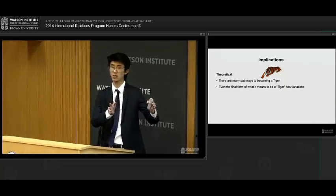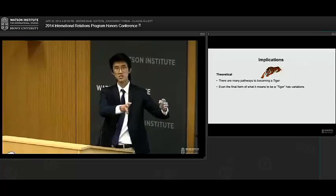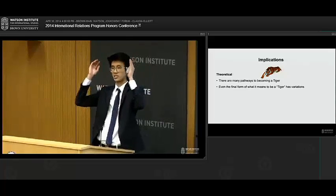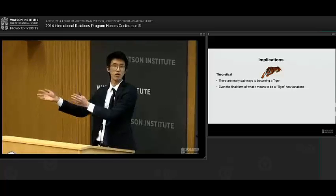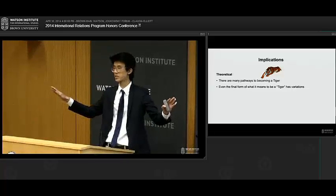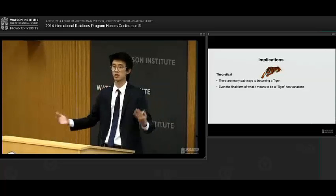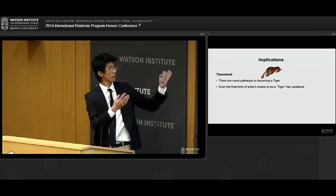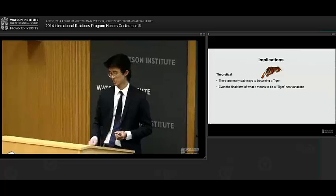So again, Korea ended up with prizing local businesses, Taiwan with prizing state-owned enterprises, and Singapore with prizing foreign firms, right? All of them strong business government relationships, but highly different in their configurations. And so even the final form of what it means to be a tiger has variations.